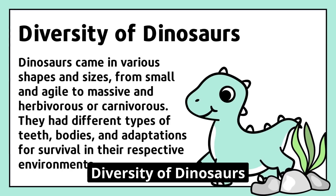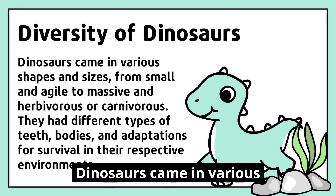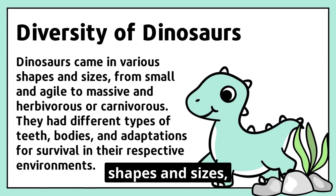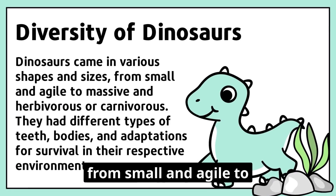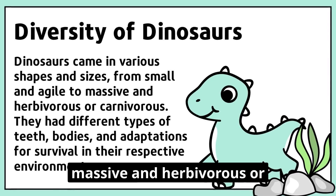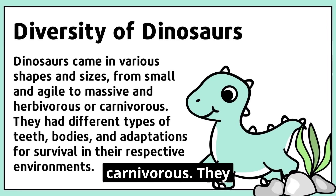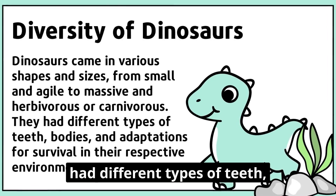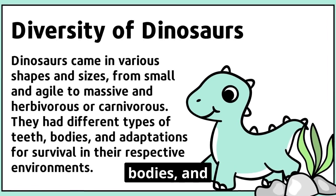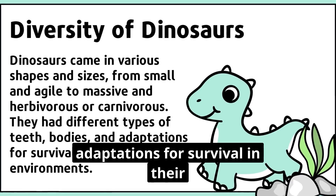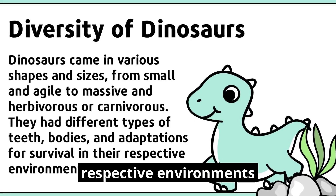Dinosaurs came in various shapes and sizes, from small and agile to massive and herbivorous or carnivorous. They had different types of teeth, bodies, and adaptations for survival in their respective environments.